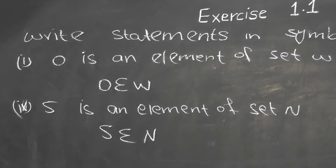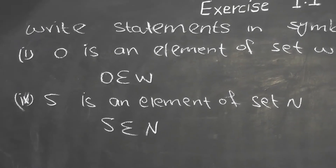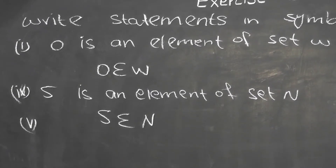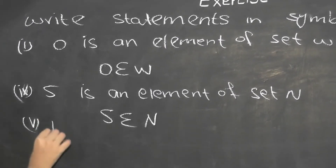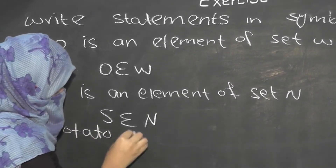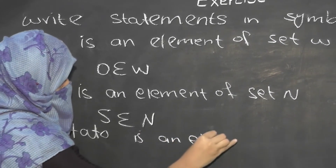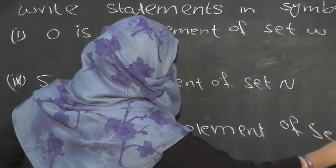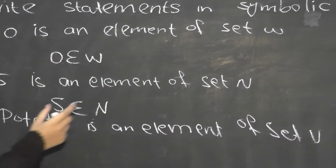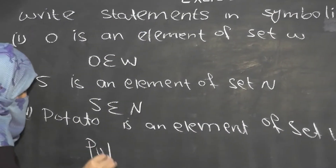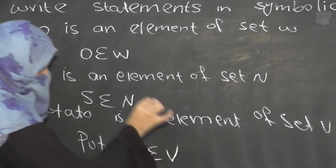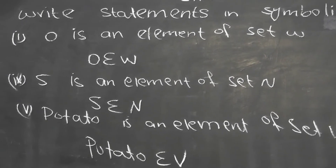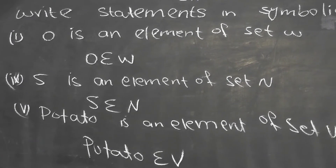Now let's do another question. Question number 4, part: '4 is an element of set V.' Potato is an element of set V, so you can write: potato belongs to set V.